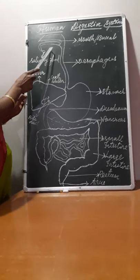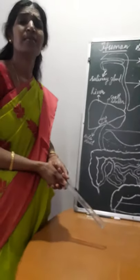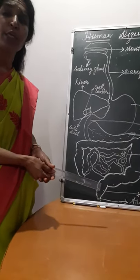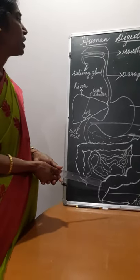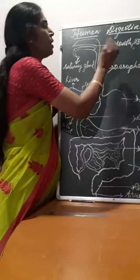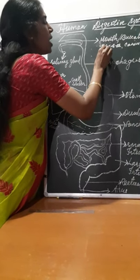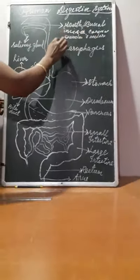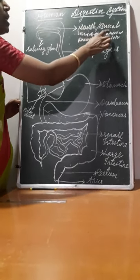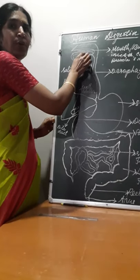The tongue also helps in speaking. There are a total of 32 teeth in adults, but in children there are 20 teeth, known as milk teeth. There are mainly four types of teeth in the mouth: incisors, canine, premolars, and molars. These four types of teeth help in chewing, cutting, and grinding, which helps in breaking down the food in the mouth.